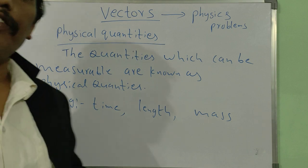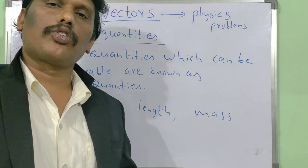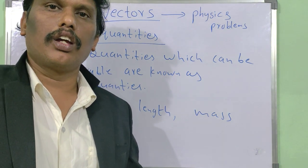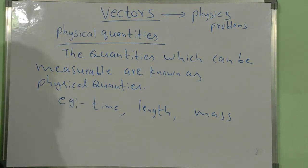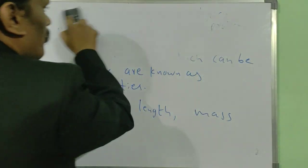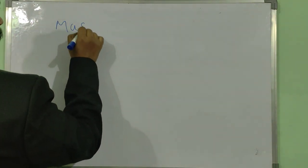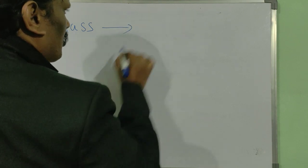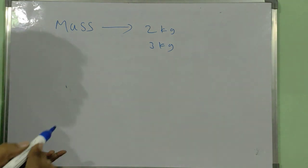These physical quantities are divided into two groups. One group we call scalars, and another group we call vectors. On what basis are they divided? Some physical quantities have only magnitude. For example, if I consider mass, we measure 2 kg, 3 kg, or 5 kg — just a number.